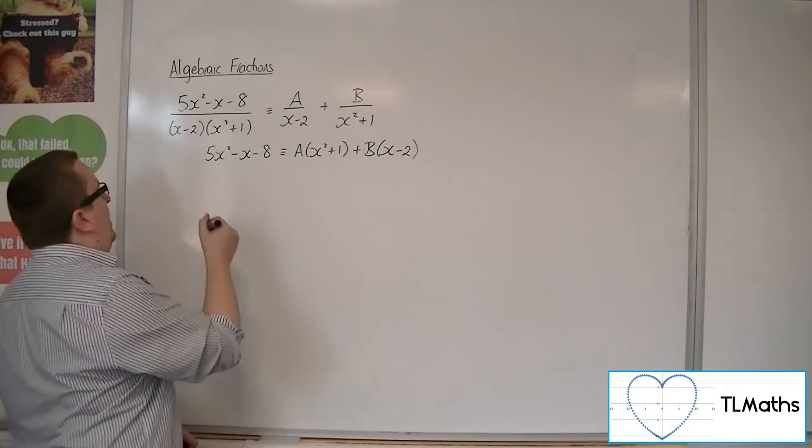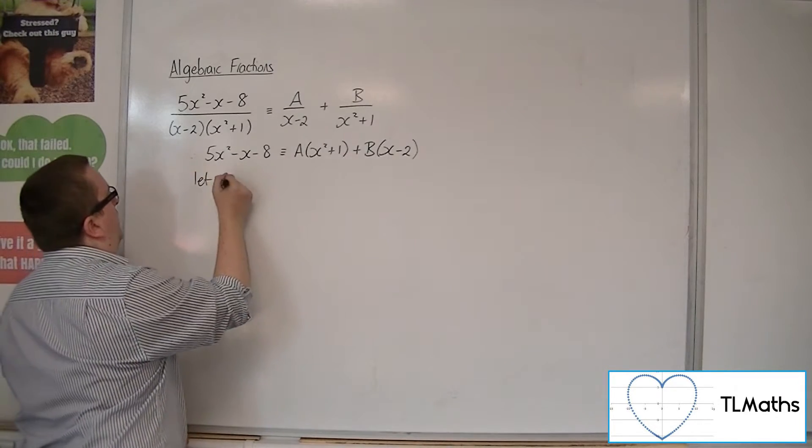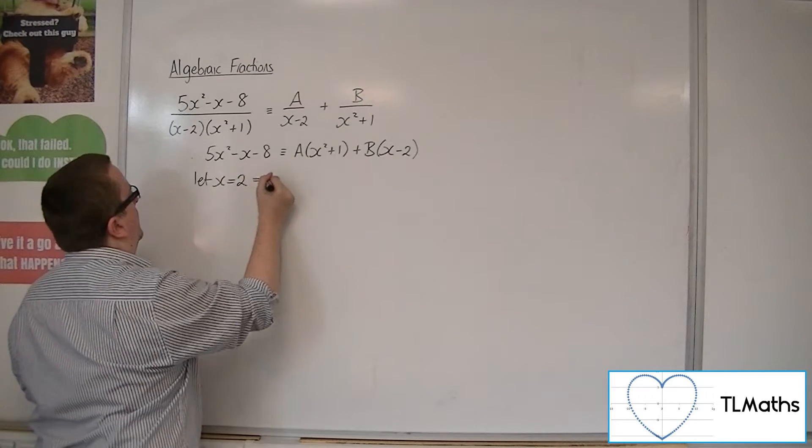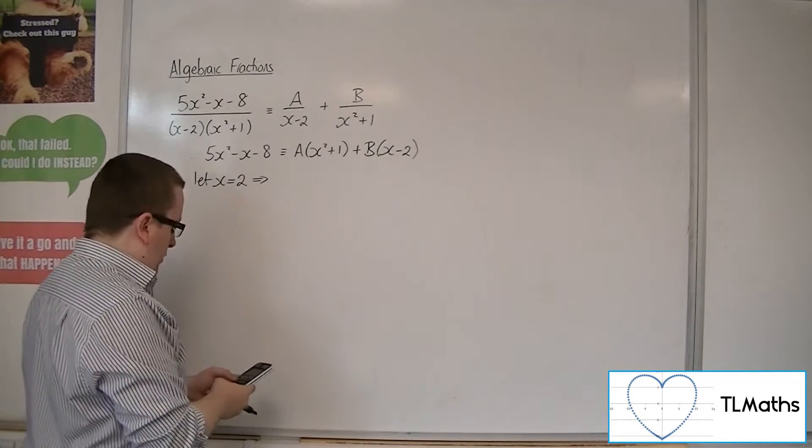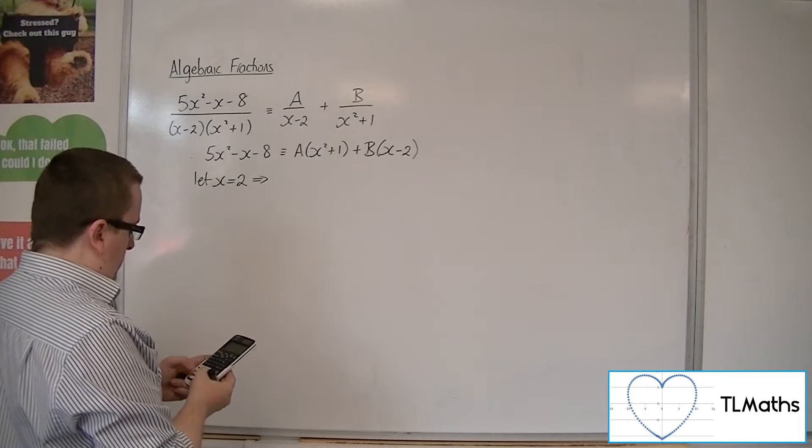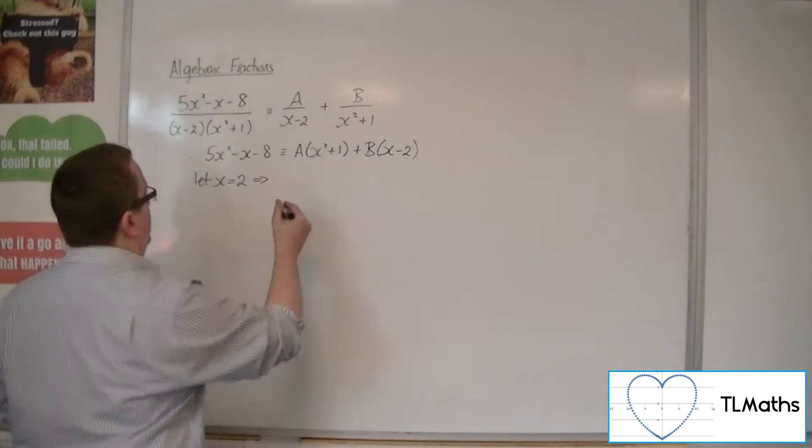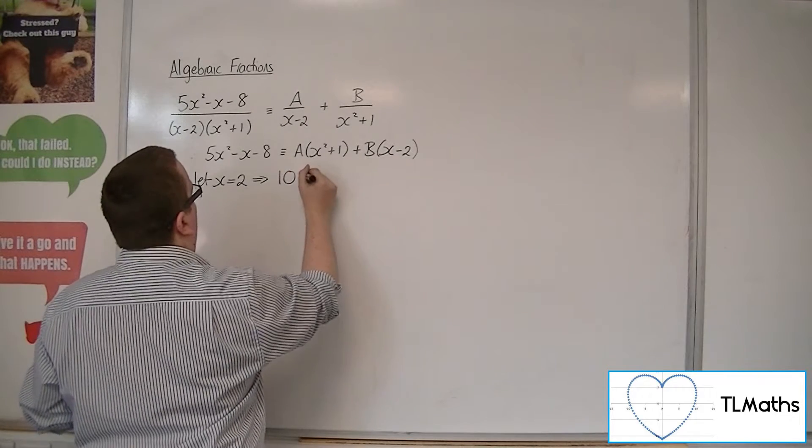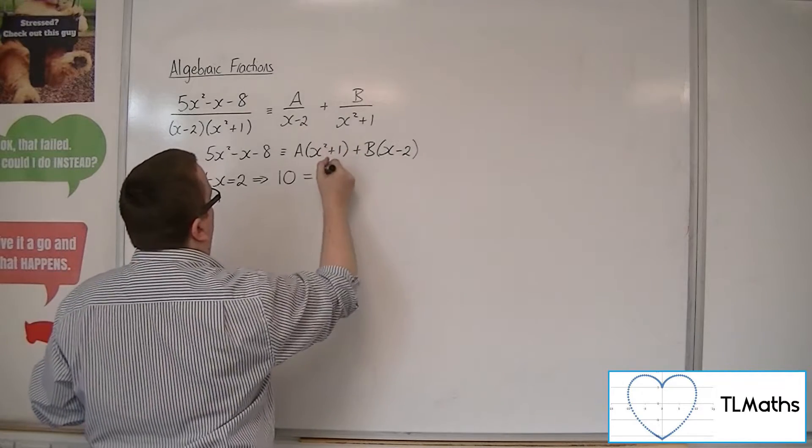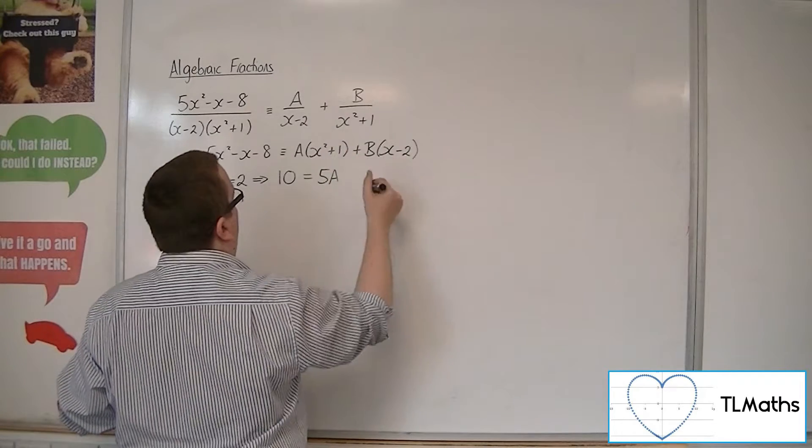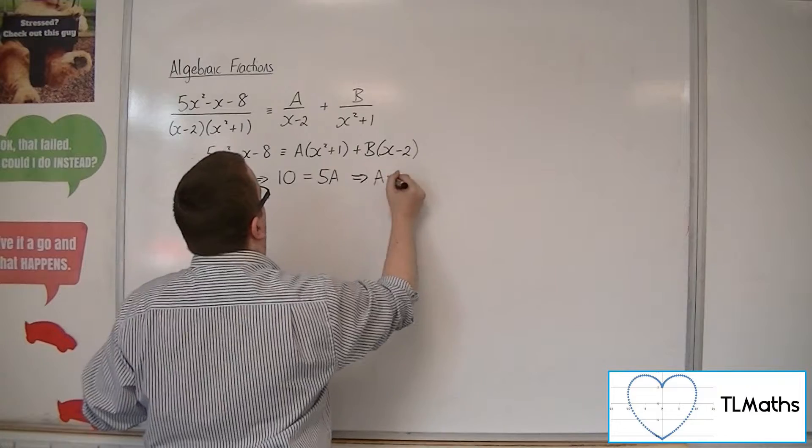So if I now let x be 2, I'm going to have 5 lots of 2 squared, take away 2, take away 8, so that's 10. And then I'm going to get 2 squared plus 1, so that's 5A. The 2 knocks out that bracket, so A must be 2.